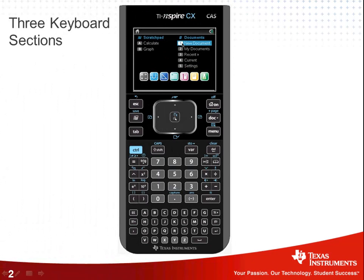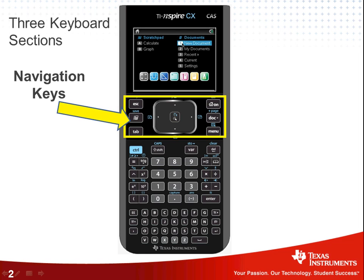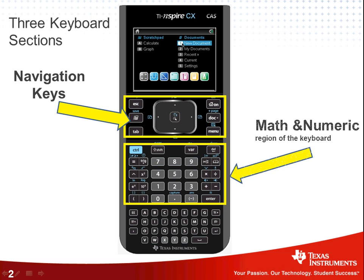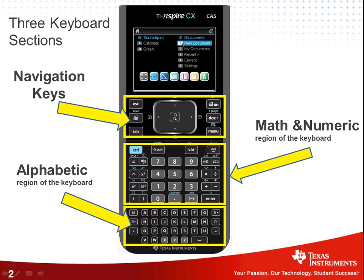What we're looking at here is the TI-Nspire CX CAS. CAS stands for Computer Algebra System. Let me just point out the three keyboard sections. Right here are the navigation keys, enabling you to navigate around. And then we have the math and numeric region of the keyboard, and finally the alphabetic region of the keyboard.